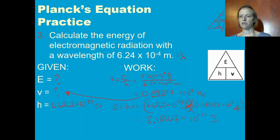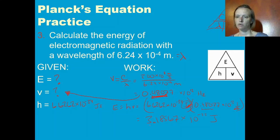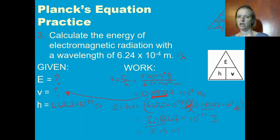This is correct scientific notation, but not correct sig figs. Remember, I said we only knew 3 sig figs in this number. So 1, 2, 3 — that gives me 3 sig figs in my final answer, and you should get 3.19 times 10 to the negative 22 joules. I hope this helped.